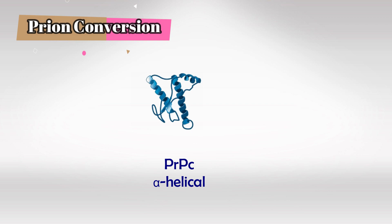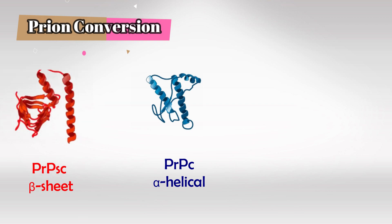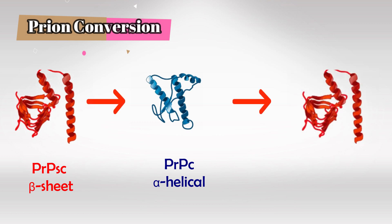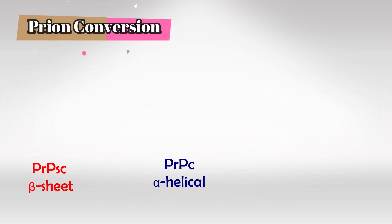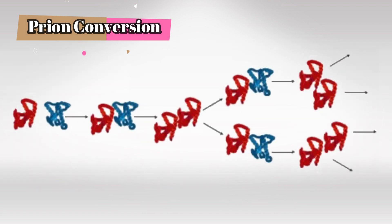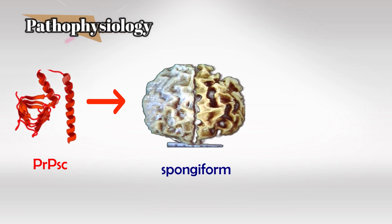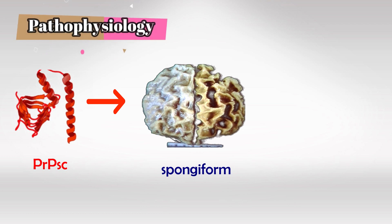On a molecular level, prion C is an alpha helical shape, while its evil twin is a beta sheet shape. The regular protein is called prion C; the evil one is called prion SC. The problem is that prion SC can convert normal prions to prion SC as well, and this can start a chain reaction. Prion SC can cause spongification of the brain.